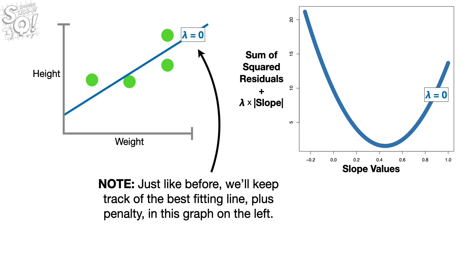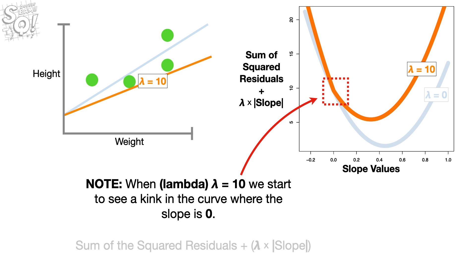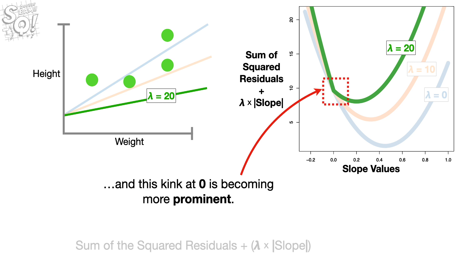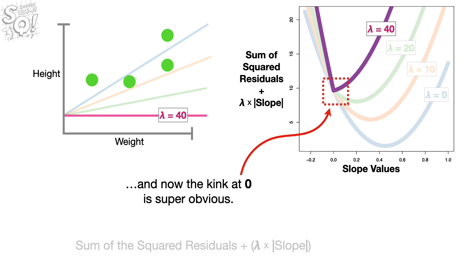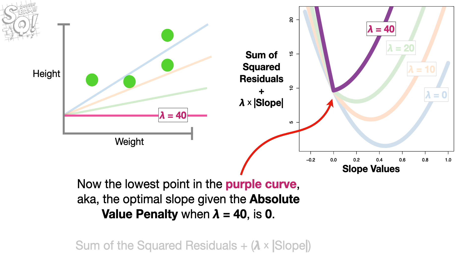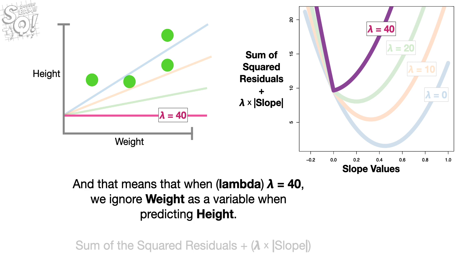Just like before, we'll keep track of the best-fitting line plus penalty in this graph on the left. The thick orange line represents lambda equals 10, so now we are turning on the penalty and shrinking the slope. Note: when lambda equals 10, we start to see a kink in the curve where the slope is 0. The thick green line represents lambda equals 20, and this kink at 0 is becoming more prominent. Lastly, the thick purple line represents lambda equals 40, and now the kink at 0 is super obvious. The lowest point in the purple curve — the optimal slope given the absolute value penalty when lambda equals 40 — is 0. That means the slope of the optimal line is 0, and when lambda equals 40, we ignore weight as a variable when predicting height.